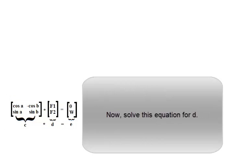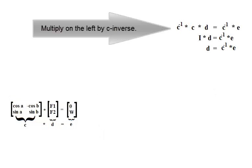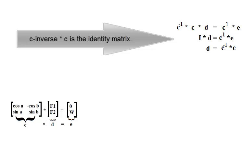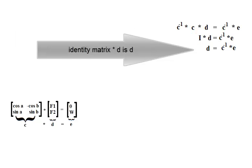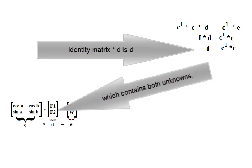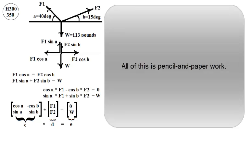Now solve this equation for D. Multiply on the left by C inverse. C inverse times C is the identity matrix. The identity matrix multiplied by D is D, which contains both unknowns, F1 and F2. All of this is pencil and paper work.